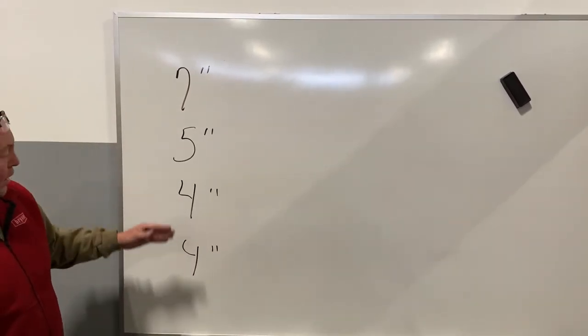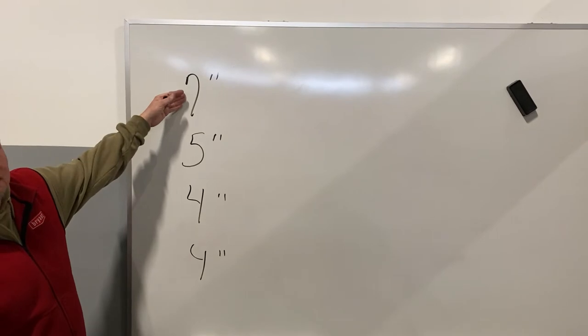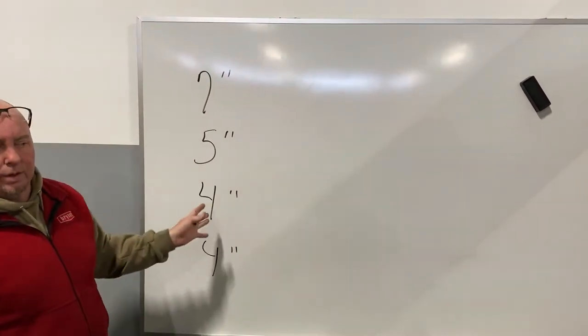So I got these appliances, a 4, 4, 5, and a 7. What manifold pipe would I need to handle those?